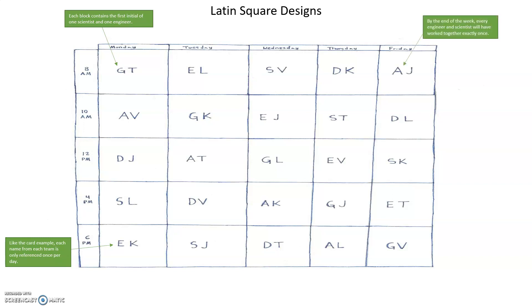This means that the Latin square was designed so that every engineer and every scientist has to work together once throughout the week, and each person only has to work one time slot once throughout the week as well. The workloads and schedules are distributed evenly for everyone, and everyone gets to work together at some point during the week regardless of what everyone else is doing at any given time. With this strategy, no one gets left behind or feels left out, and the amount of work done throughout the week is ultimately maximized.